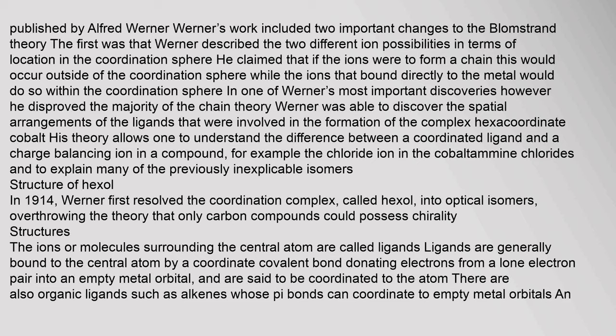Werner described the two different ion possibilities in terms of location in the coordination sphere. He claimed that if the ions were to form a chain, this would occur outside of the coordination sphere, while ions that bound directly to the metal would do so within it. Werner was able to discover the spatial arrangements of the ligands involved in the formation of the complex hexacoordinate cobalt. His theory allows one to understand the difference between a coordinated ligand and a charge-balancing ion in a compound, and to explain many previously inexplicable isomers.